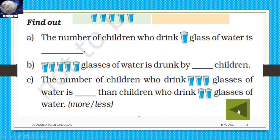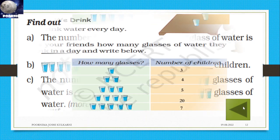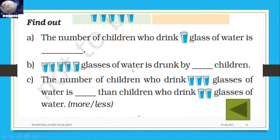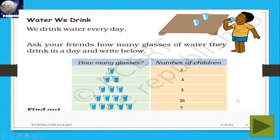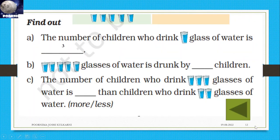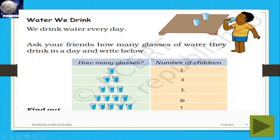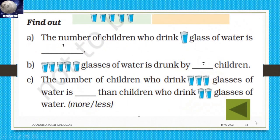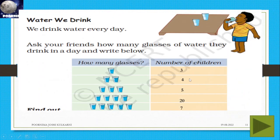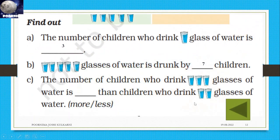Number of children who drink one glass of water is three. Five glasses of water is drunk by seven children — seven. Number of children who drink three glasses of water: three glasses is five, two glasses is four, so three glasses is more than two glasses. Write more here.